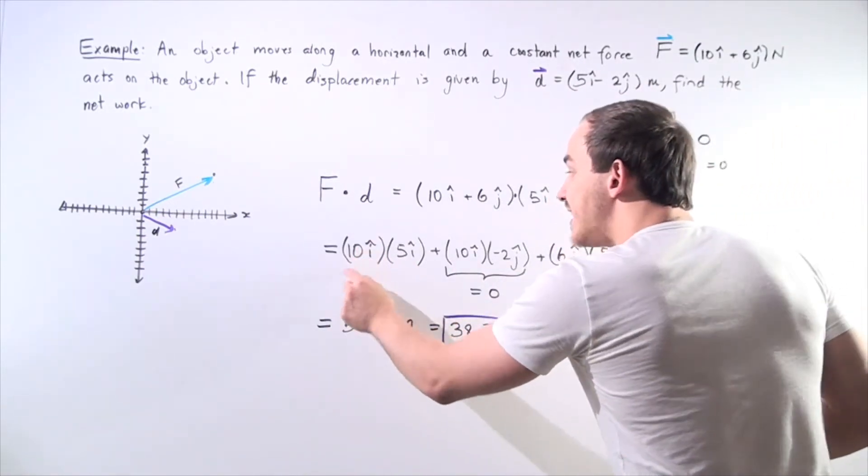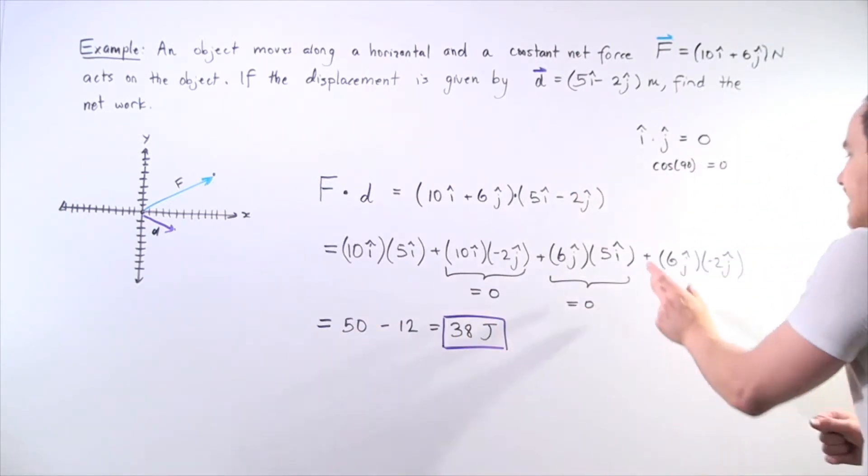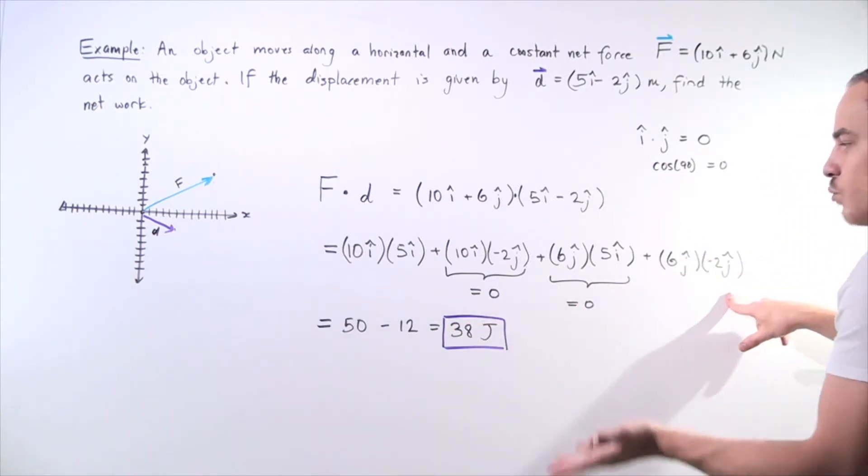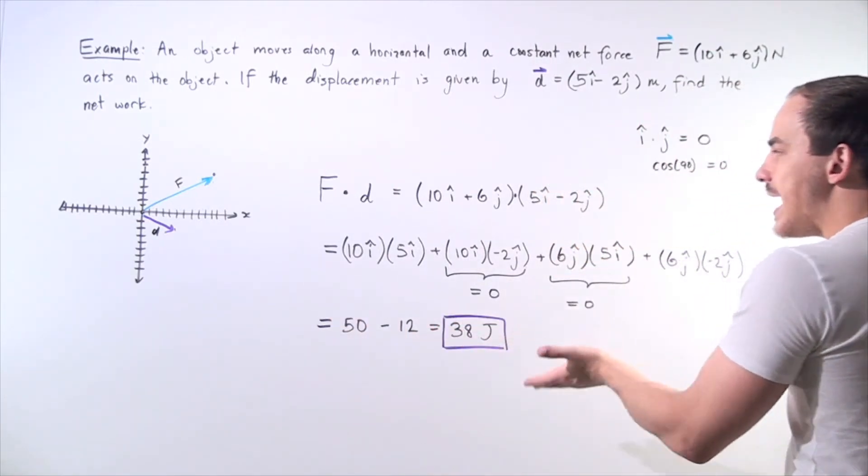So 10i hat and 5i hat is 50 times 1 so 50 and 6j hat minus 2j hat so 6 times negative 2 is 12 and j hat times j hat is simply 1 so I have 50 minus 12, 38 joules.